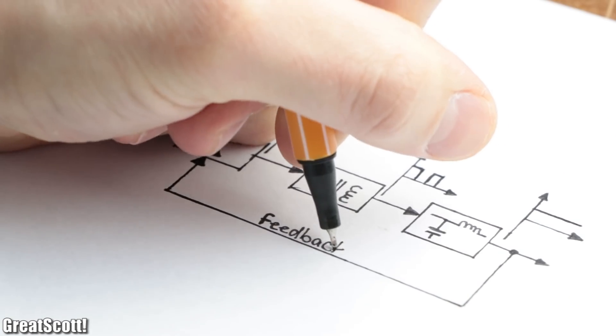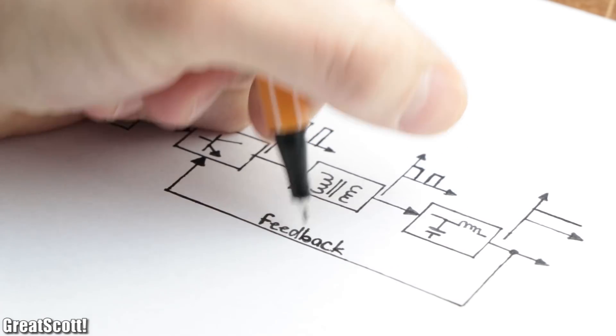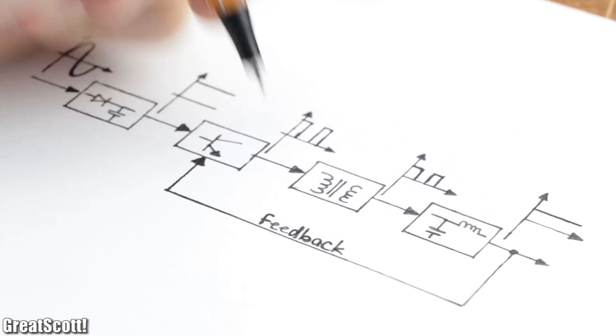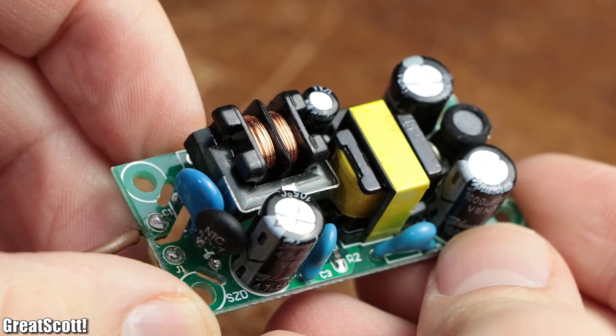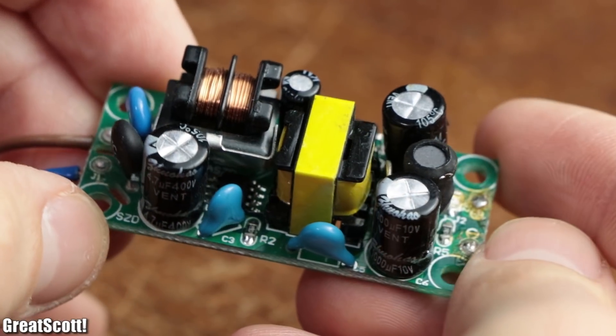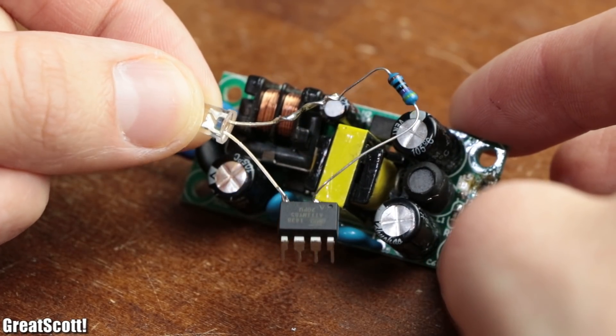But as you can see in this functional principle diagram, which also comes with a feedback system, switch mode power supplies are not that simple to build and require quite a lot of components. This is not only relatively expensive but also takes up too much space in comparison to my ATtiny project.